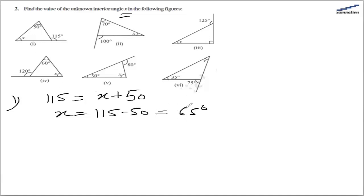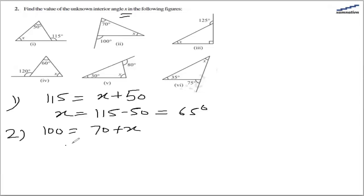For the second part, the exterior angle is 100 degrees, and the opposite interior angles are 70 and x. Solving this, 100 minus 70 gives x as 30 degrees.